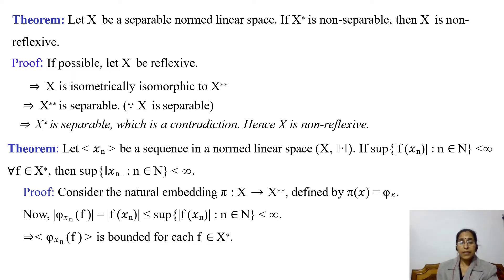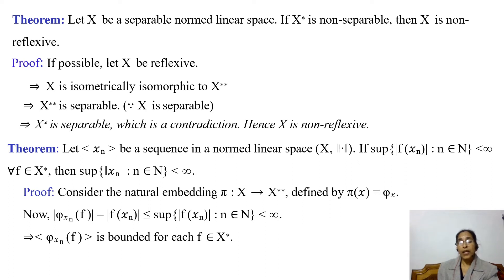The next theorem states: let {xₙ} be a sequence in a normed linear space x. If the supremum of |f(xₙ)| over all n in ℕ is finite for every f in x*, then the supremum of ‖xₙ‖ over all n in ℕ is also finite. Let us prove this theorem.